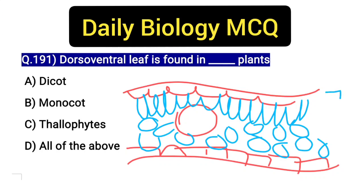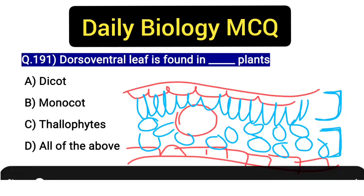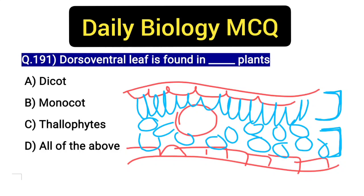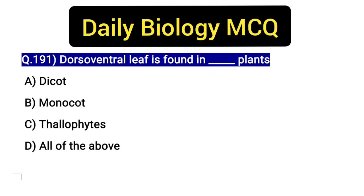On the upper surface there are pillar-shaped, elongated palisade cells, and on the lower surface there are spongy cells. These two different shapes and sizes on the upper and lower surface define the dorsoventral leaf. If rounded cells are present on both the upper and lower surface, we call it an isobilateral leaf.